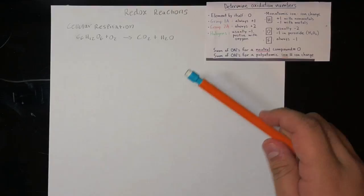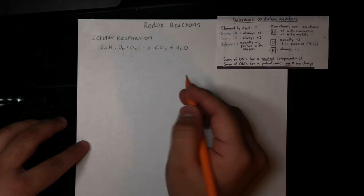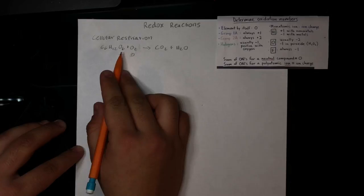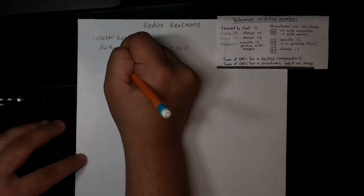We know from the rules that an element by itself is always zero, so oxygen's oxidation number is zero. And right here we have glucose — we can start with oxygen. Oxygen is usually negative two when it's not a peroxide, so this would be negative two.